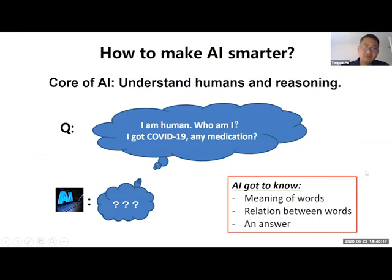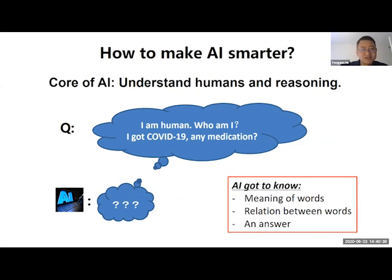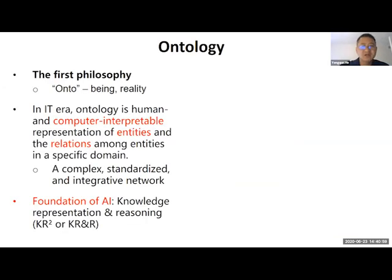Ontology is a foundation of AI. Let's start with an AI question: if I'm telling a robot, 'I'm a human and I got COVID-19, can you give me any medication?' the AI might not know how to respond. For the AI to be smart, it should know the meaning of individual words, what the words mean when put together, and then rely on some background knowledge to give you an answer.